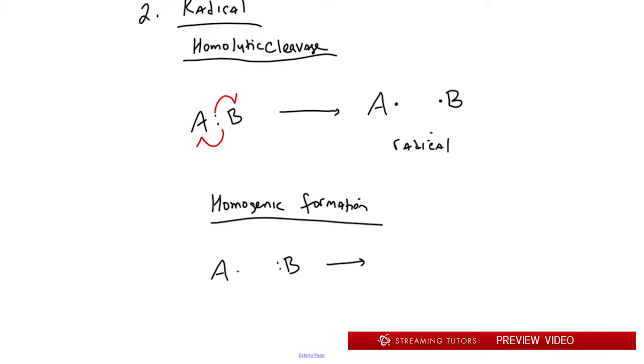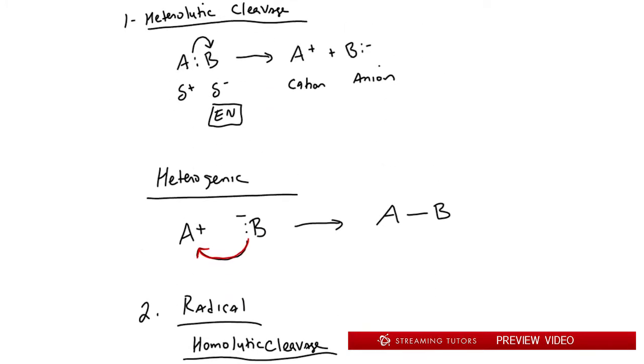They're meeting in the middle. These two electrons go into the middle to make a bond, and now we have an A-B bond. There are two ways you could break or form. If you break equally and form equally, it's a radical reaction. If you break unequally and form unequally, it's a polar reaction.